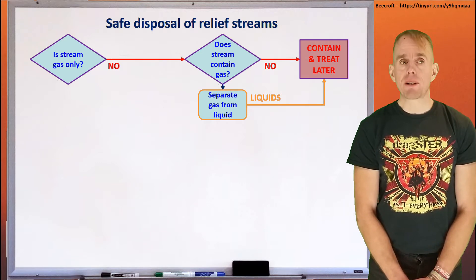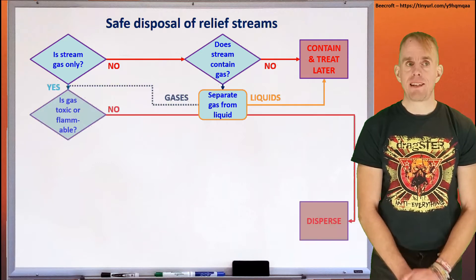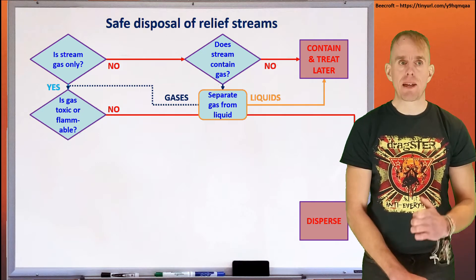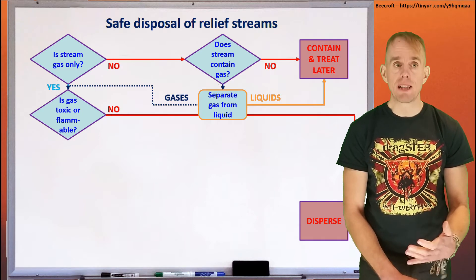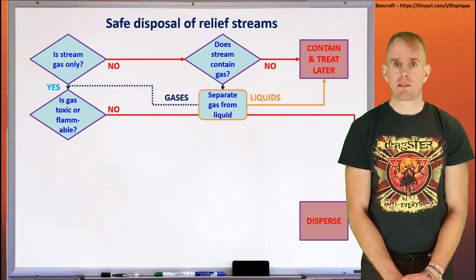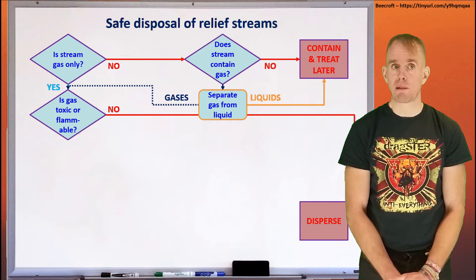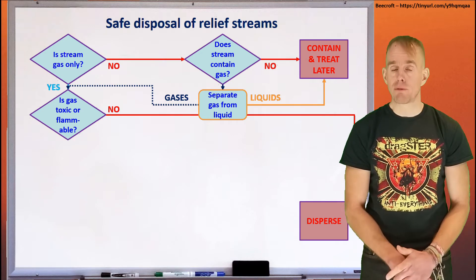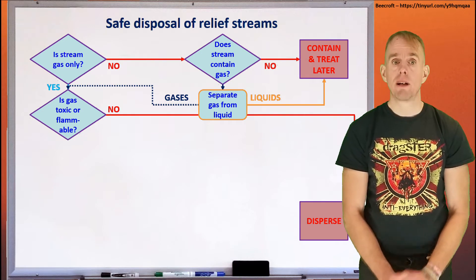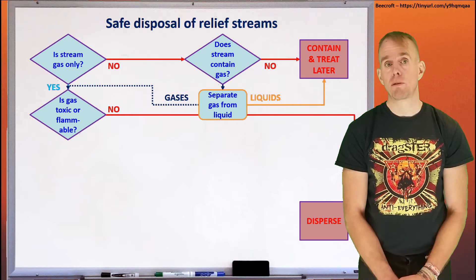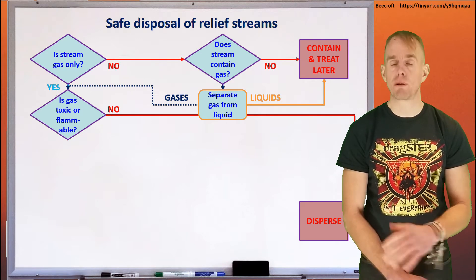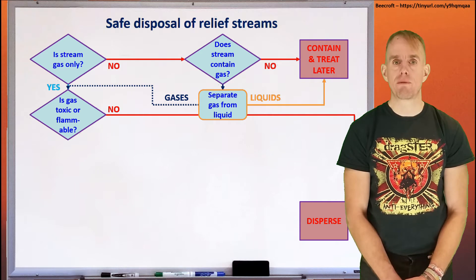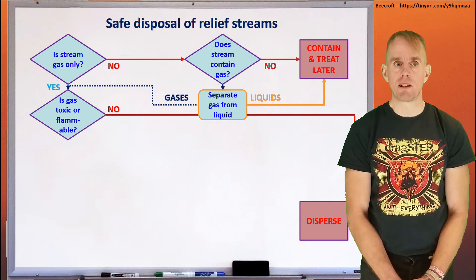If we've got gas in our relief stream, then we make sure that the relief stream contains only gas. And then we ask ourselves the question: is the gas either toxic or flammable? If not, the answer is an easy one — disperse to atmosphere through a relief valve or through a bursting disk. We'll see pictures of relief valves that do this in a second.